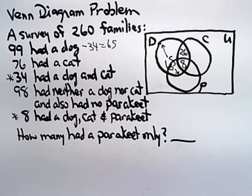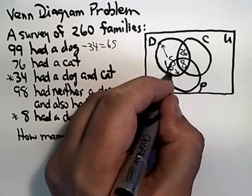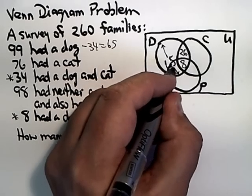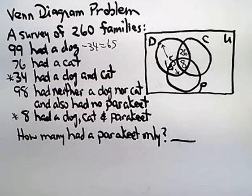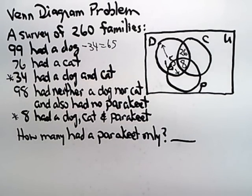I don't know the split between that. I don't know how many of those 65 go in the smaller region and how many go in the bigger region, but I do know if you lump those two regions together, they have to come out to 65 in order to make 99 in the dog circle entirely. It's a little tricky.